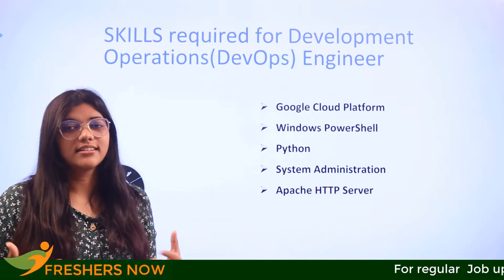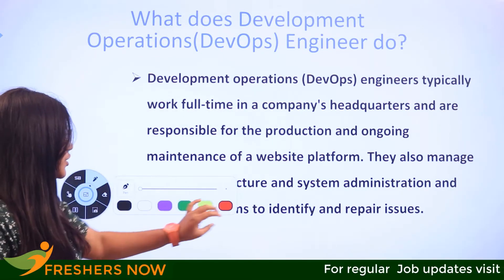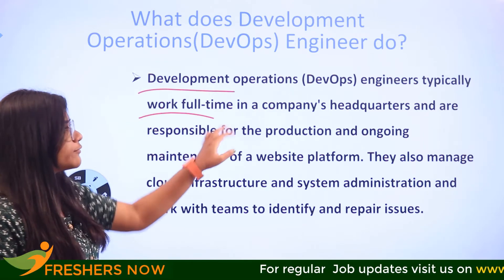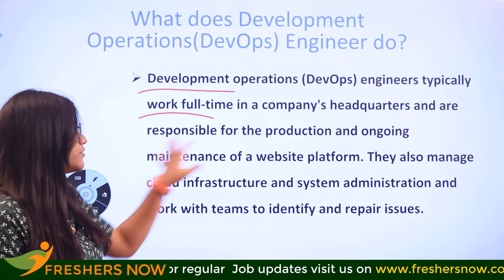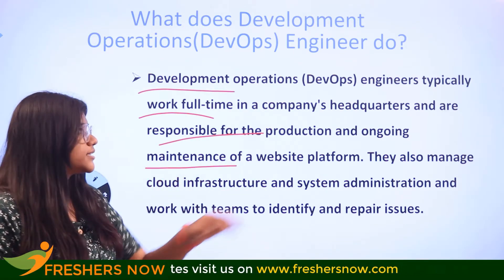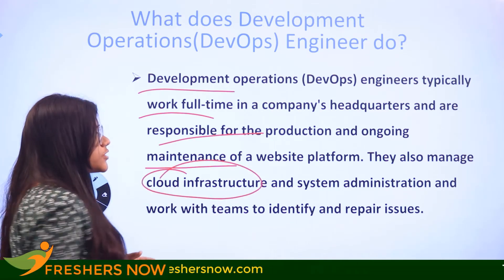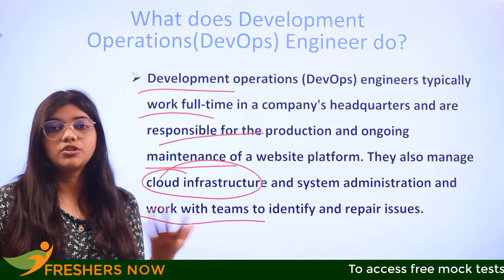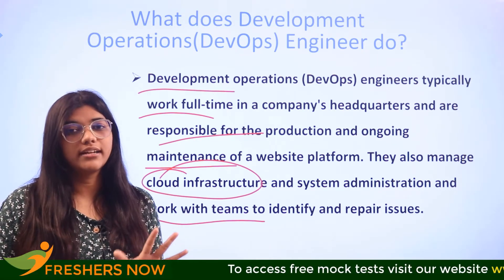If you're wondering what a DevOps engineer does, they typically work full-time at a company's headquarters, representing objectives and being responsible for the production and ongoing maintenance of the website platform. They also manage cloud infrastructure and system administration, working with teams to identify and repair issues.